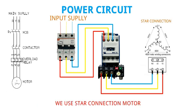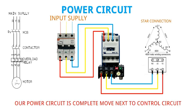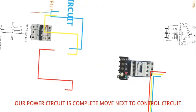Finally, connect the output of the overload relay with the motor. We use a star connection motor. Our power circuit is complete — now move on to the control circuit.